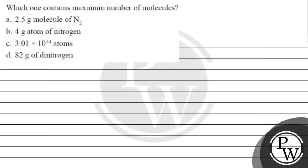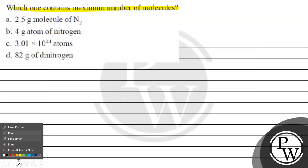Hello, bacho. Let's read this question. The question says, which one contains the maximum number of molecules? Option A: 2.5 gram molecule of nitrogen. Option B: 4 gram atom of nitrogen. Option C: 3.01 into 10 raised to the power 24 atoms. Option D: 82 gram of nitrogen.